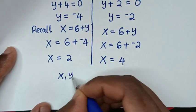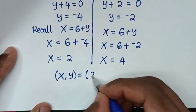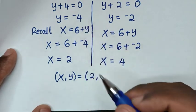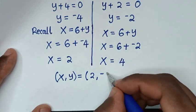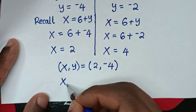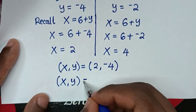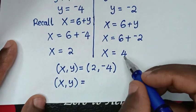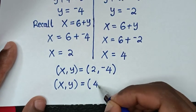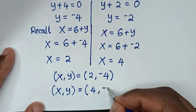From the first solution, (x, y) equals (2, negative 4). From the second solution, (x, y) equals (4, negative 2).